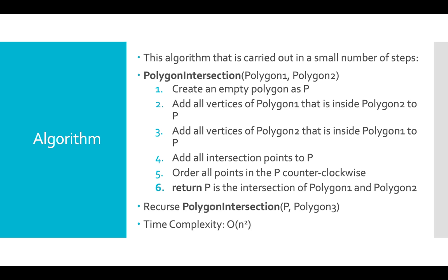Next, I'll add all vertices of polygon 1 that are inside polygon 2 to P. Next, I'll do the same step like step 2. I'll add all the vertices of polygon 2 that are inside polygon 1 to P. Next step, I'll add all the intersection points to P.